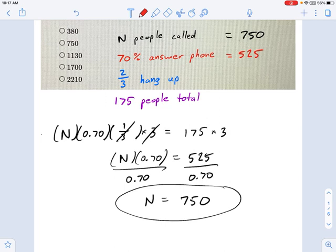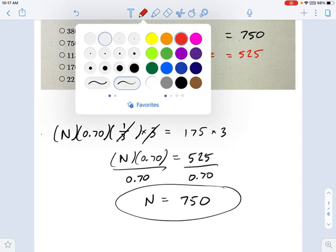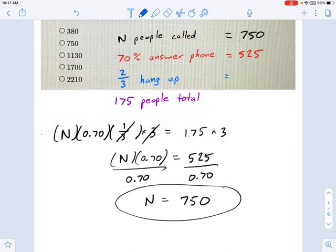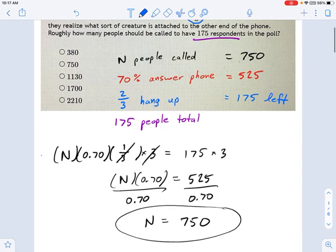And if two-thirds hang up, how many are left? Well, 525 divided by 3 means 175 are left on the phone. Okay, so that's how you go through this backwards, setting up an algebra problem. Thank you.